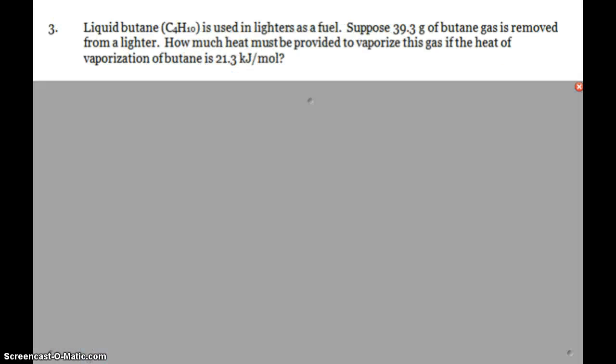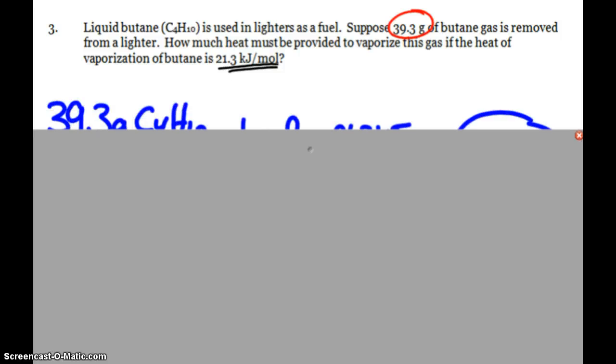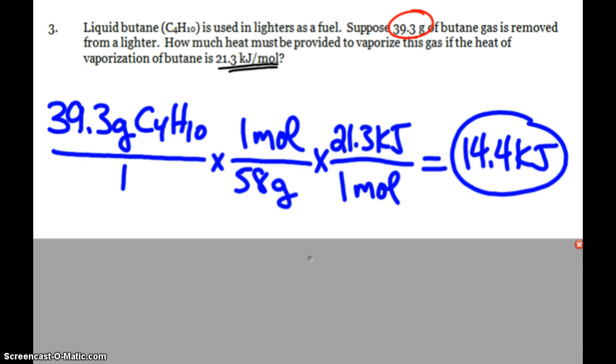Let's look at a couple sample problems. Here you see liquid butane used in lighters. You've got 39.3 grams of this liquid butane gas removed. How much heat must be provided to vaporize this gas? It's just a simple stoichiometry problem because you see a nice conversion factor, 21.3 kilojoules per mole. I can see I'm going to need to start with my grams of butane, change that to moles with the molar mass, and then use that heat of vaporization, kilojoules per mole. And you see that it's 14.4 kilojoules.